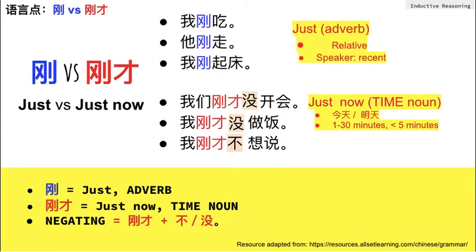To sum up, 刚 and 刚才 are very different. 刚 means 'just' as an adverb. 刚才 means 'just now' as a time noun. When negating something that did not happen just now, we only use 刚才, as in 我们刚才没开会, 我刚才没做饭, 我刚才不想说. That's it for today. Bye!